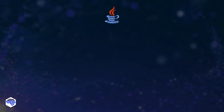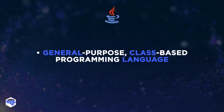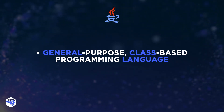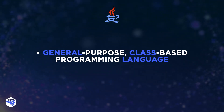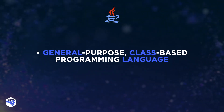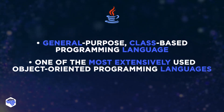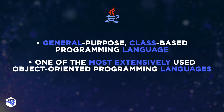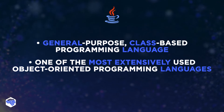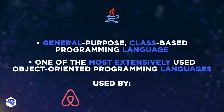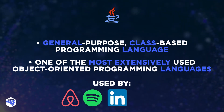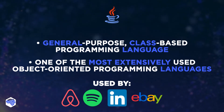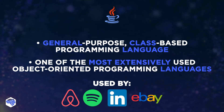Fourth is Java — a general-purpose, class-based programming language explicitly designed to implement all dependencies. Undoubtedly, Java is one of the most extensively used object-oriented programming languages in the market. Airbnb, Spotify, LinkedIn, and eBay use Java, like hundreds of other well-known companies.